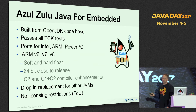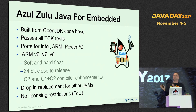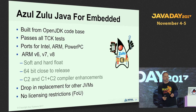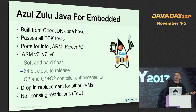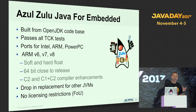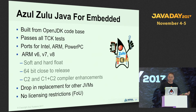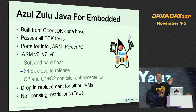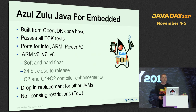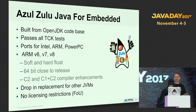Our marketing slide: we have Zulu, which is our build of the OpenJDK. In addition to freely available versions for Windows, Mac, and Linux, we also have free versions for Raspberry Pi and ARM. You can get an OpenJDK build for ARM from us and put it on the Raspberry Pi — it passes all the TCK tests. We've also ported it to PowerPC. We support ARMv6, ARMv7, and ARMv8 — including a 64-bit ARM version now released. It's a drop-in replacement for other JVMs with no licensing restrictions on field of use.